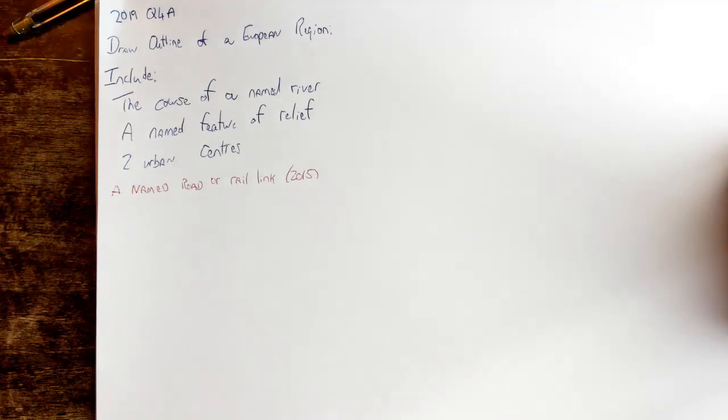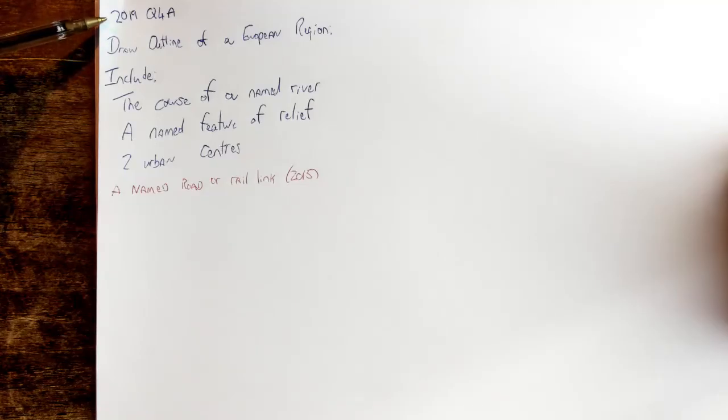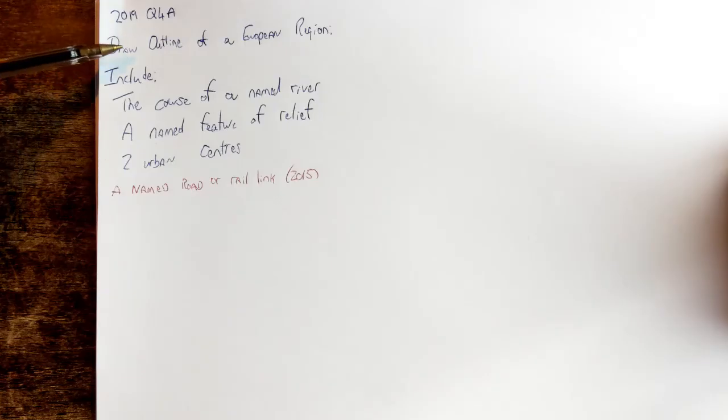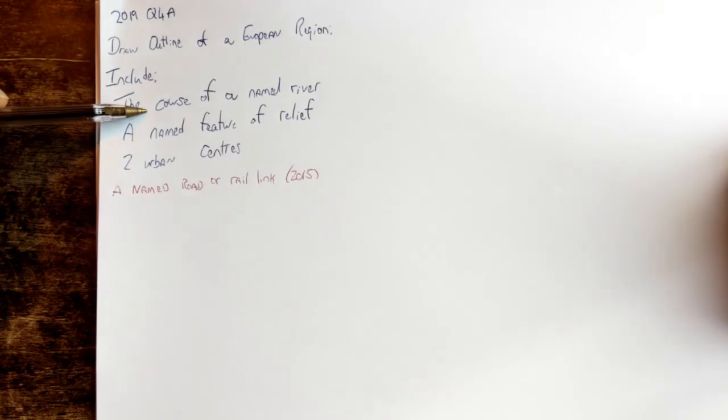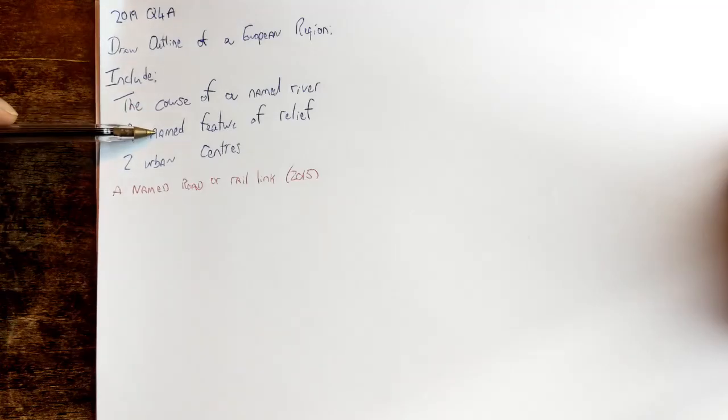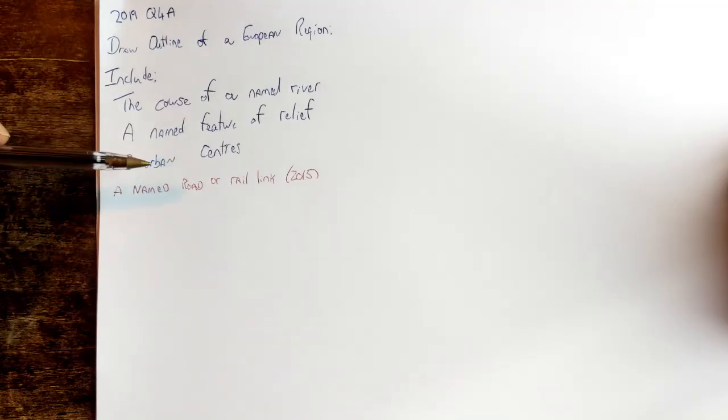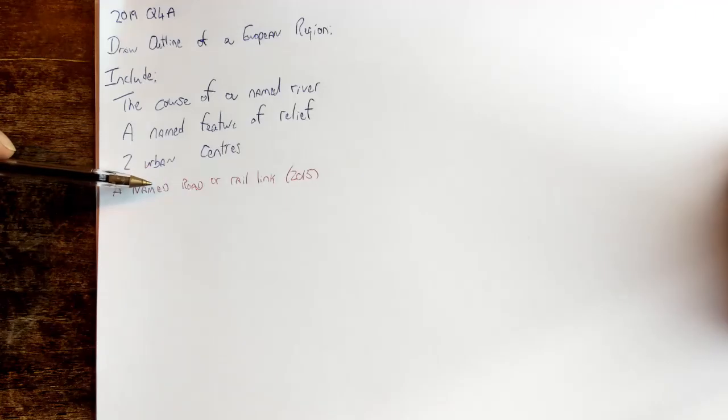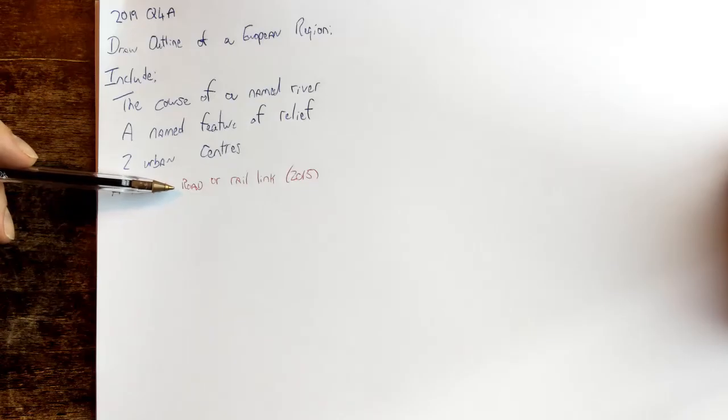Okay, so we're going to have a look at a sketch map and how to sketch a region. 2019 question 4a on the Leaving Cert asked: draw the outline of a European region, include the course of a named river, a named feature of relief, two urban centers. And in 2015 they also asked for a named road or rail link, so we'll include that in our sketch.